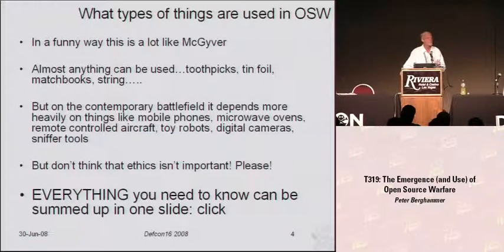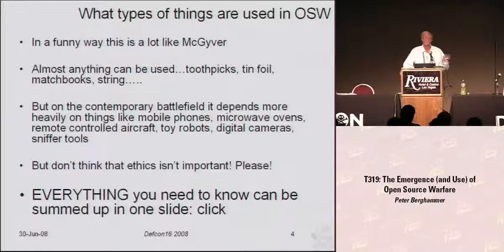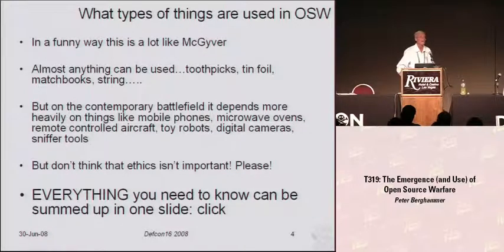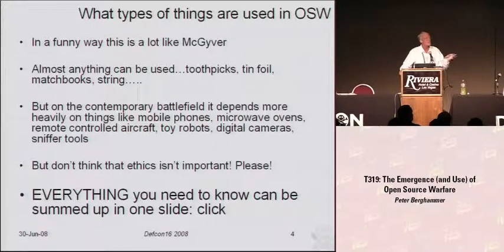On the modern battlefield, what we see is a very heavy and almost over-reliance on technology, whether it's the United States or the Israelis — conventional armies recently engaged. We're seeing something of a parity in what's taking place in Ossetia with Georgia and Russia. The counterinsurgents, however, have changed their tactics and use things like microwave ovens, mobile phones, remote-controlled aircraft, toy robots, digital cameras, and sniffer tools. I was bummed I missed the war ballooning demo, but we're going to look at one war rocketry example too.